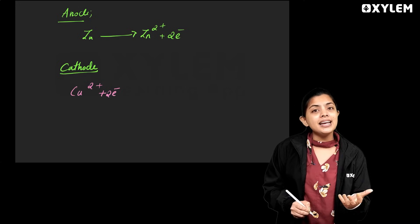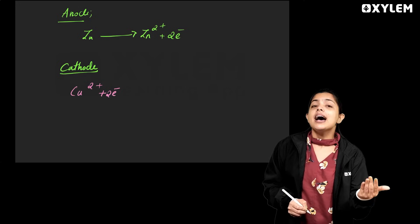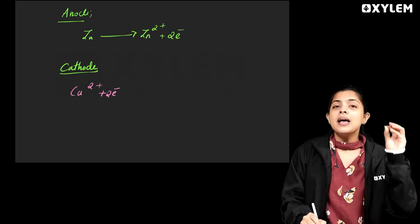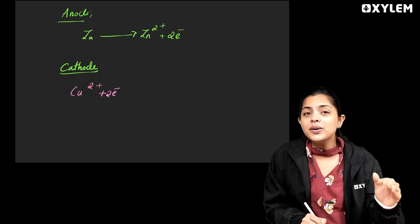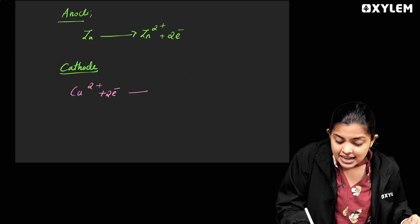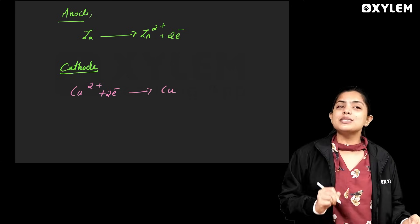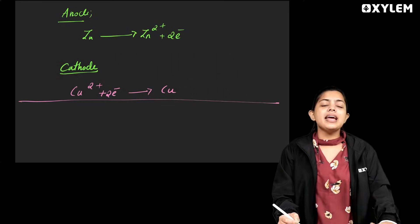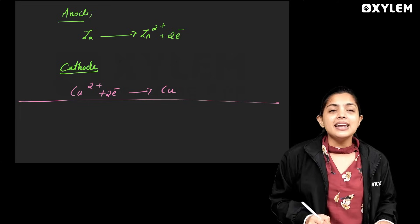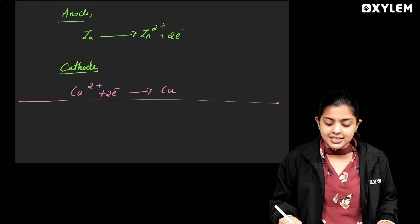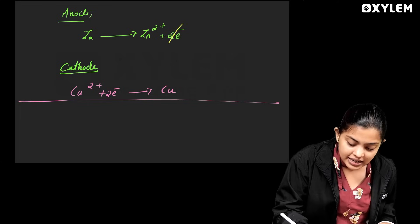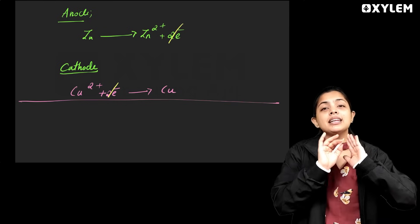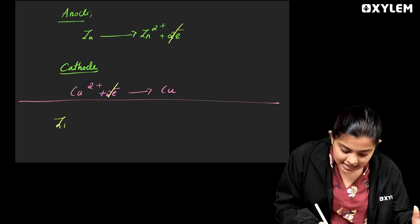Cu²⁺ plus two electrons gives a copper atom. This is the reaction of the galvanic cell — the reaction at the anode and cathode. We have two electrons in this final reaction.